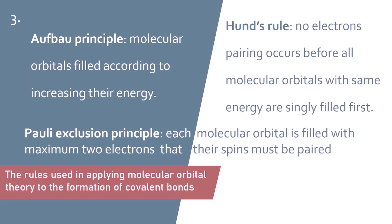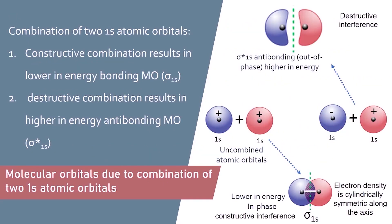Similar to atomic orbitals, the lowest molecular orbitals are filled first, with a maximum of two electrons. Molecular orbitals with the same energies are singly filled first, and when paired, their spins must be paired as well. Let's look at the formation of molecular orbitals due to the combination of two 1s orbitals.